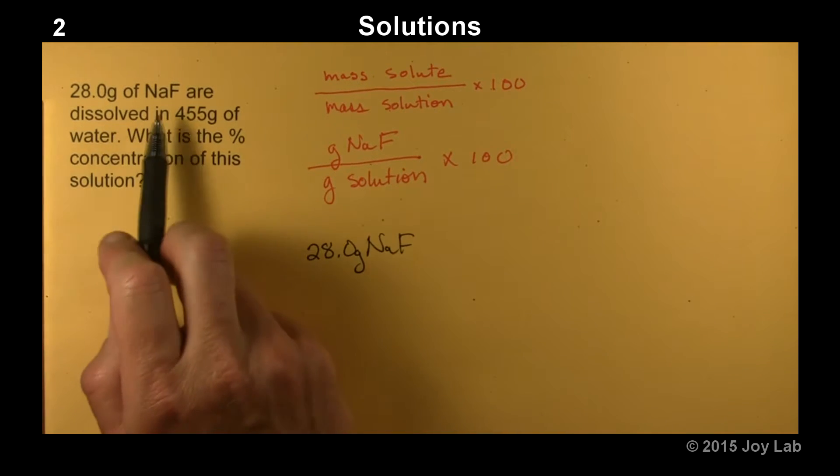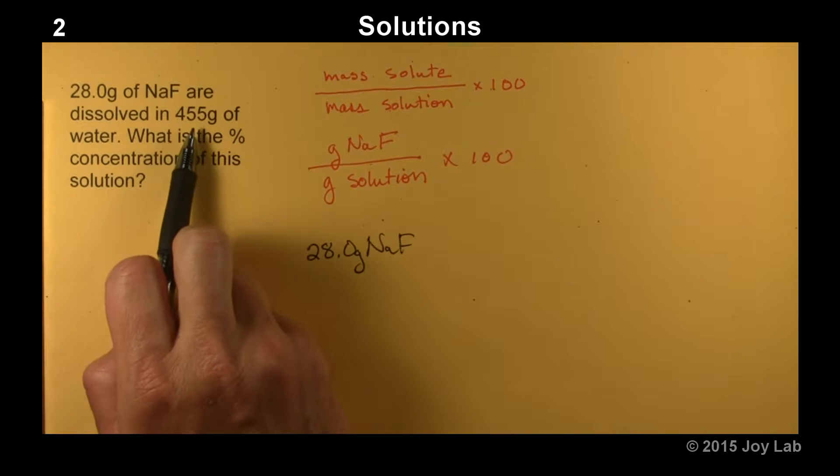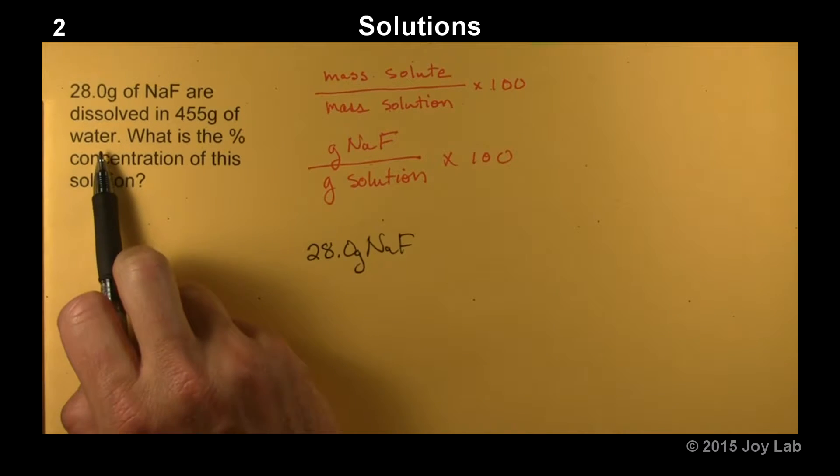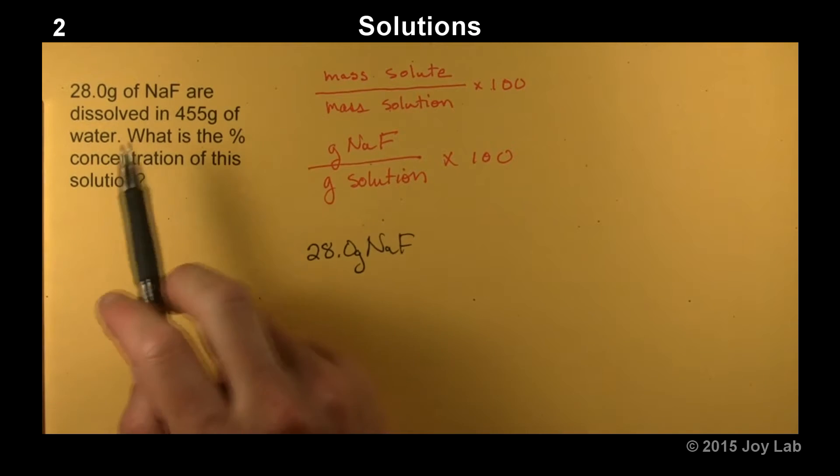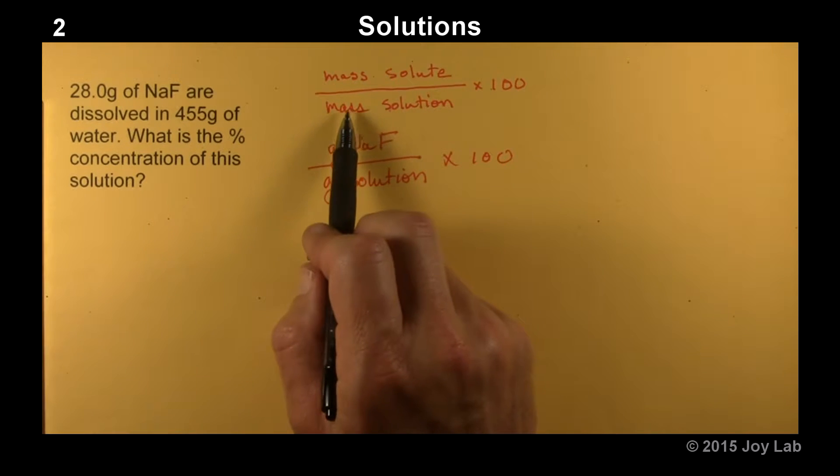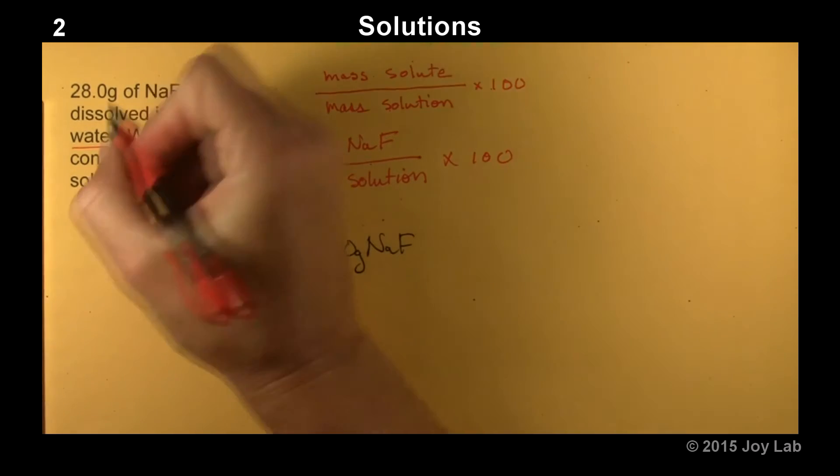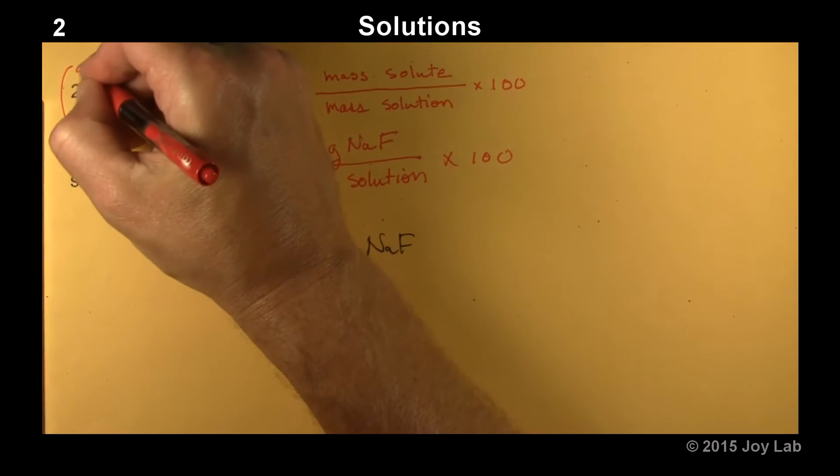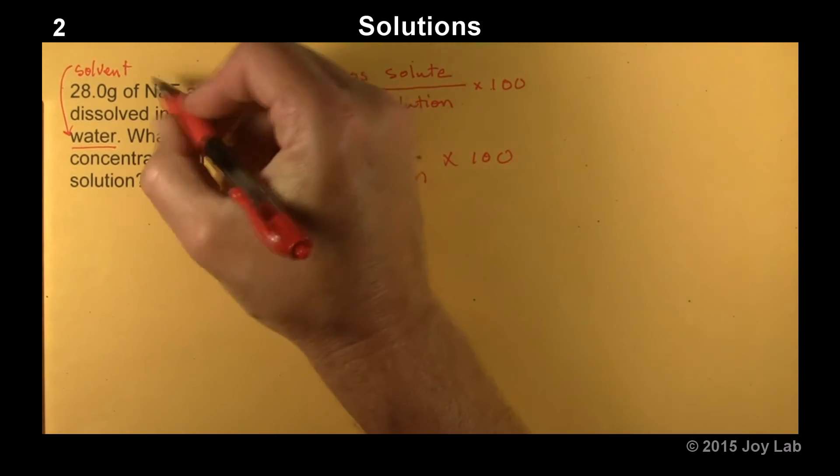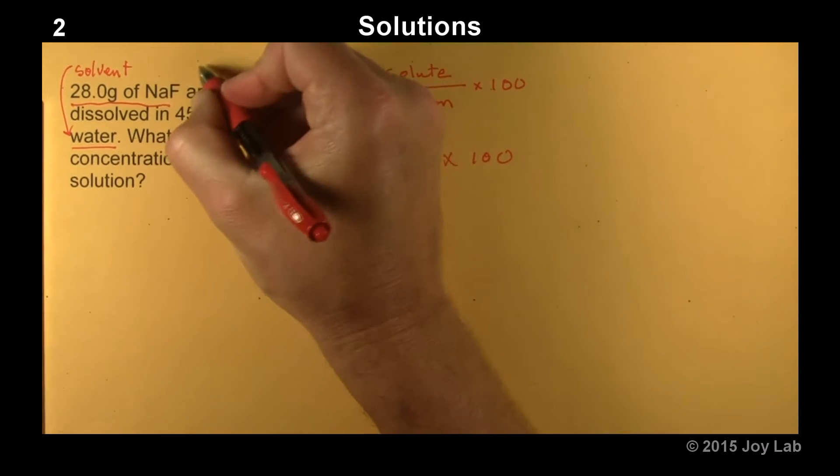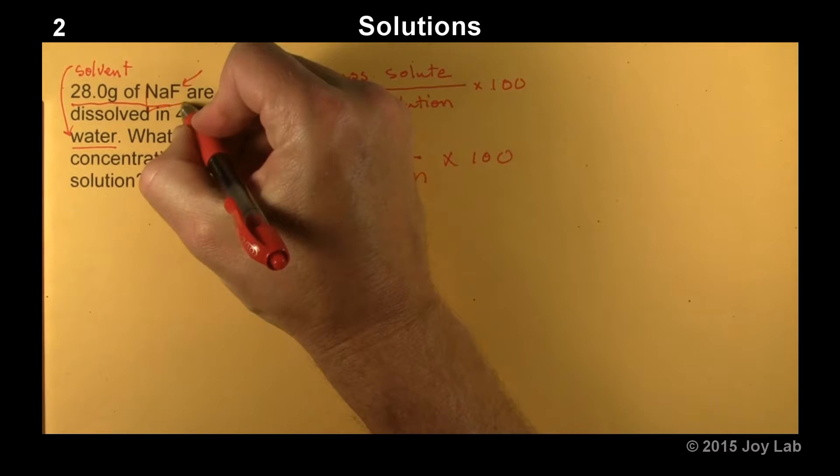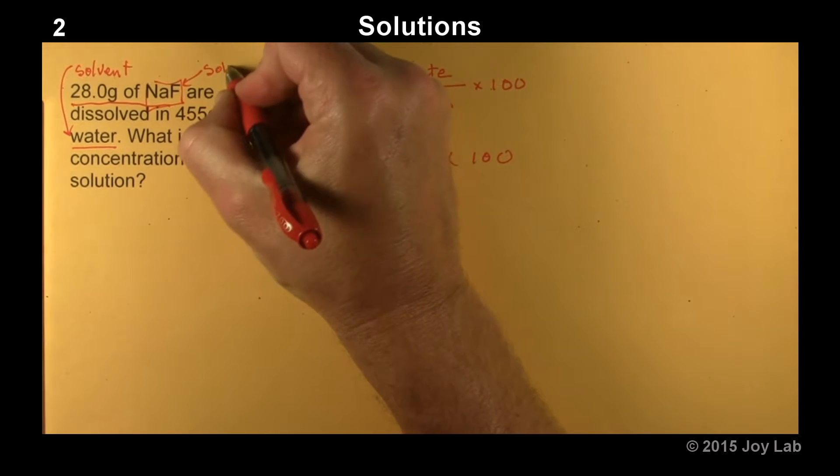But here's the big mistake. What is this? This says 28.0 grams of sodium fluoride are dissolved in 455 grams of water. So remember, the solution is both the solute and the solvent. This is the solvent. This is the solute.